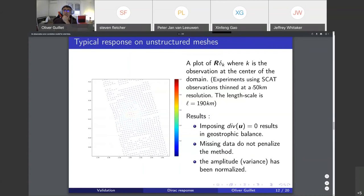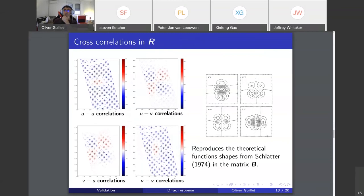This experiment uses SCAT observations thinned at 50 kilometer resolution. This is the theoretical function chosen from Schlatter for the matrix B. On the left are the ones I get on unstructured meshes for the matrix R. You get the uu correlations, the vv correlations, and the cross-correlations. You get approximately the same shapes, and this is very comforting.